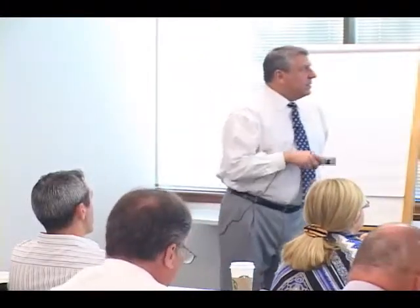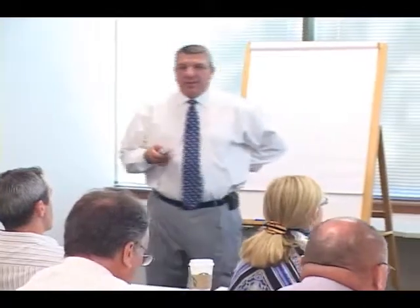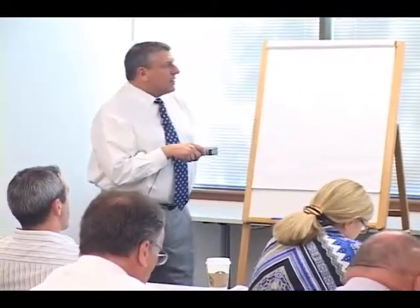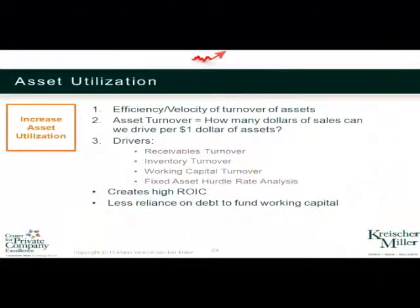Asset utilization — we're going to wrap this up now because some of this we've talked about already. Starting here, you want to increase what I call the velocity, the turnover of those assets. The more sales you can generate per dollar of assets — per dollar of invested capital — the more returns you're going to create, so long as the sales are profitable. You can't give away the margins. A measure of efficiency of a company is in its asset turnover.